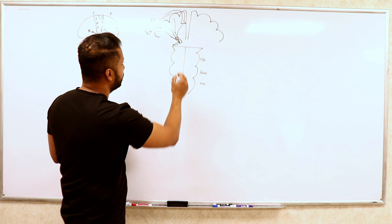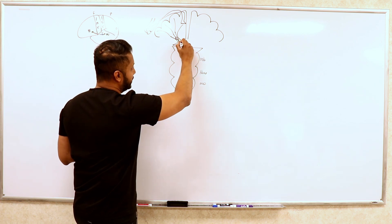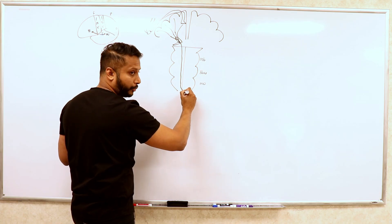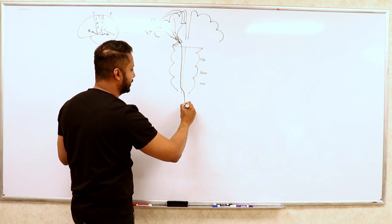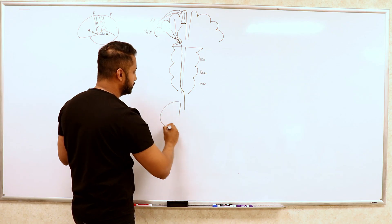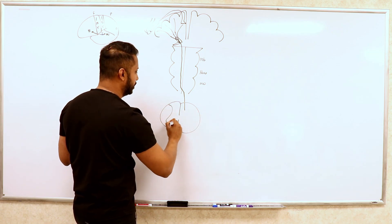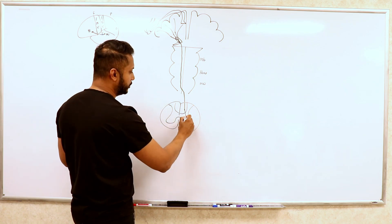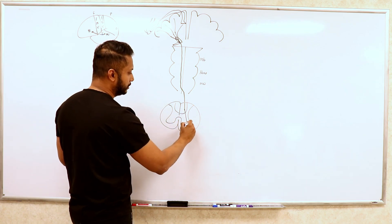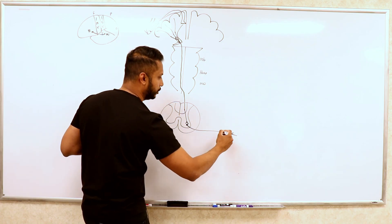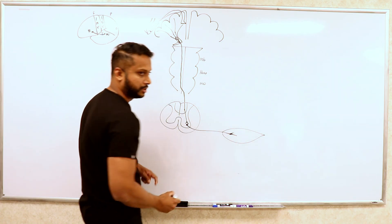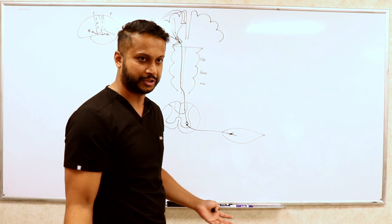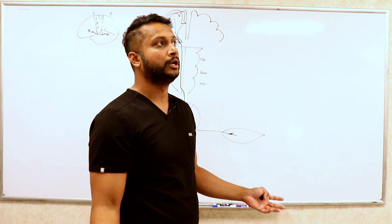Then your corticospinal tract descends in your brainstem and crosses at the inferior most part of the medulla oblongata, comes down to your spinal cord cross-section, arrives at the anterior horn cell, goes out as the second lower motor neuron, and connects to the muscle. This is your corticospinal tract — tract number one that controls motor function.